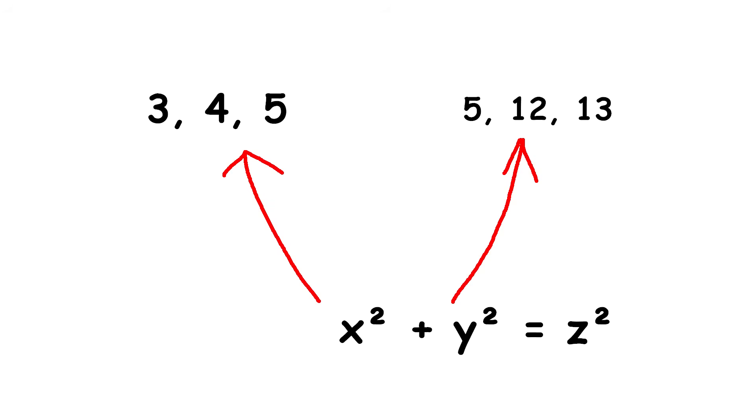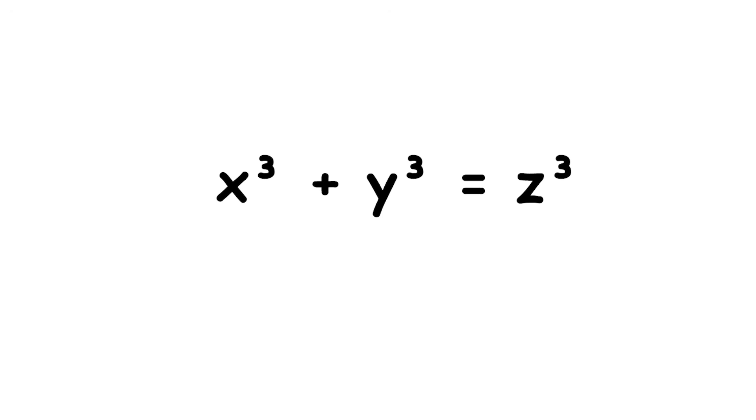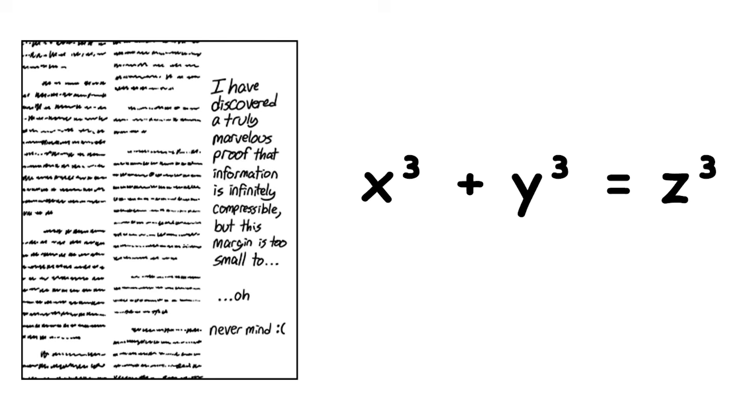Fermat claimed that there are no sets of three whole numbers, x, y, z, that satisfy the equation x cubed plus y cubed equals z cubed, and this is Fermat's Last Theorem. Fermat wrote his Last Theorem in the margin of a book, along with a note saying he had a proof, but it was too big to fit in the margin.